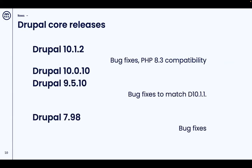There was one core update this week. It was a bug fix for 10.1, so we're up to 10.1.2. It also improves compatibility with PHP 8.3. There weren't any other updates, so we're at 10.0.10 and 9.5.10 if you haven't upgraded to 10.1 yet, and Drupal 7 is still at 7.98.